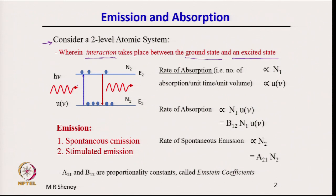A two-level atomic system is shown here. E1 is the ground state and E2 is an excited state. N1 is the number of atoms per unit volume in the ground state, and N2 is the number of atoms per unit volume in the excited state. U_nu is the spectral energy density of radiation present in this medium.